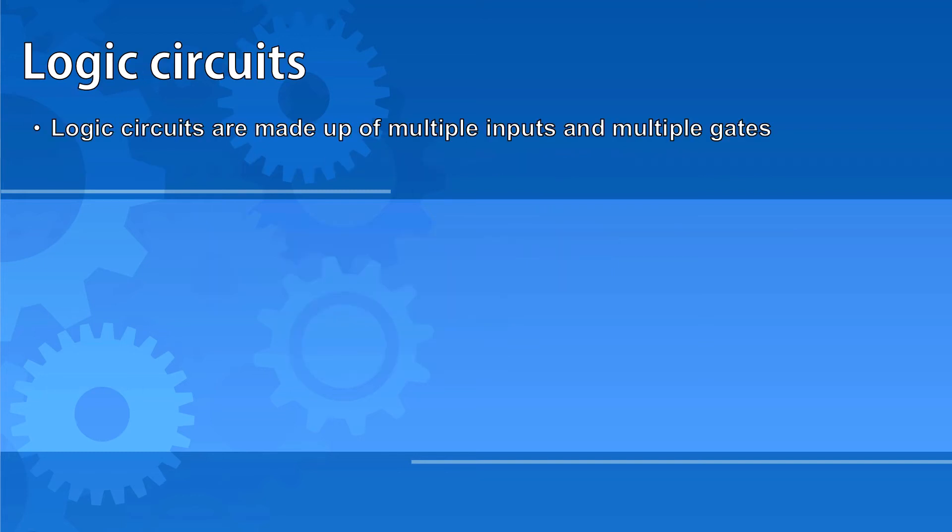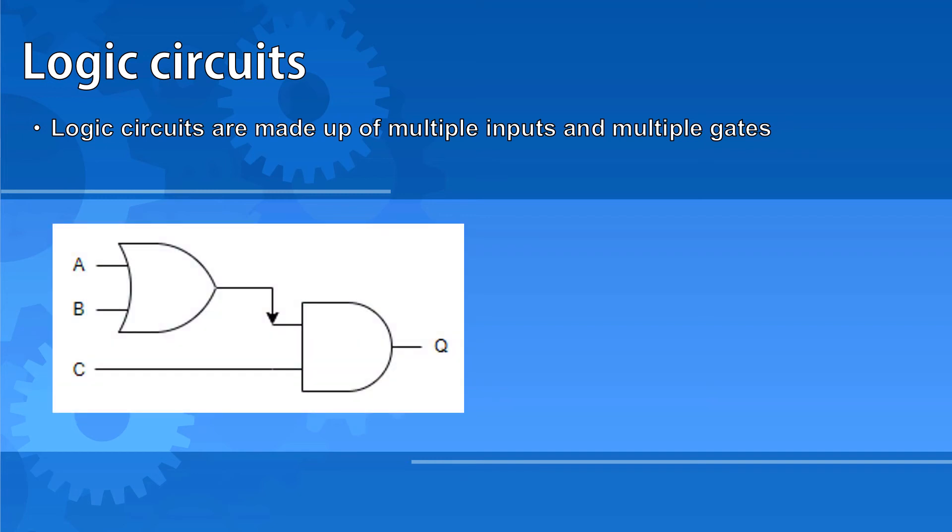Logic circuits are made up of multiple gates joined together to combine multiple inputs to make more complex outcomes. This logic circuit has three inputs and two gates to get to one output. It could be represented by the Boolean expression Q, which we use to represent the output, is equal to A or B in brackets and the result of that combined with C in an AND gate. So A plus B in brackets dot C.